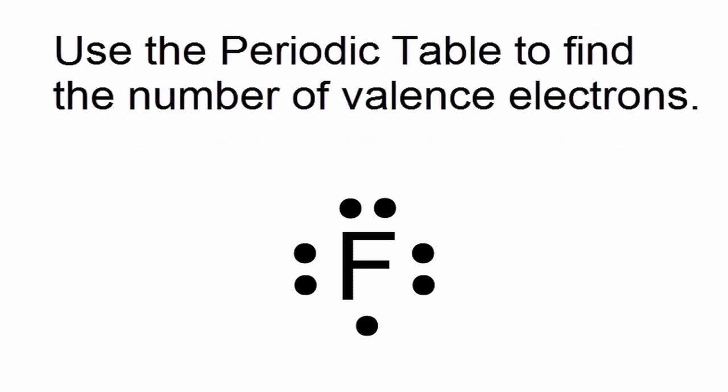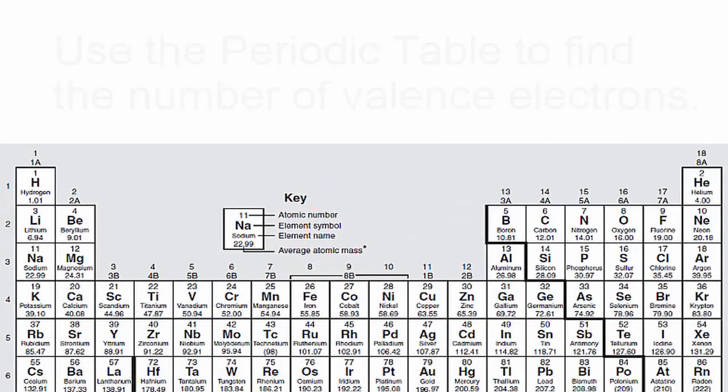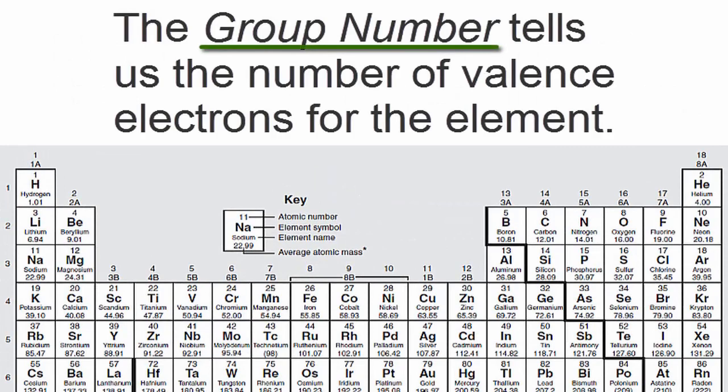We can find the number of valence electrons using the periodic table. The group number tells us the number of valence electrons for the element. For example,